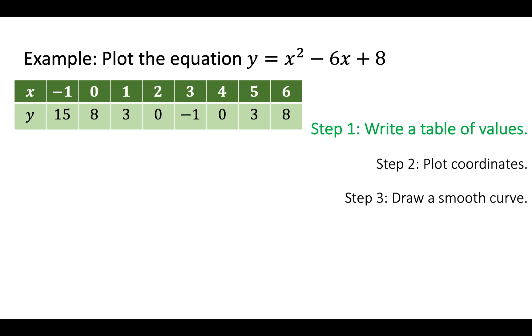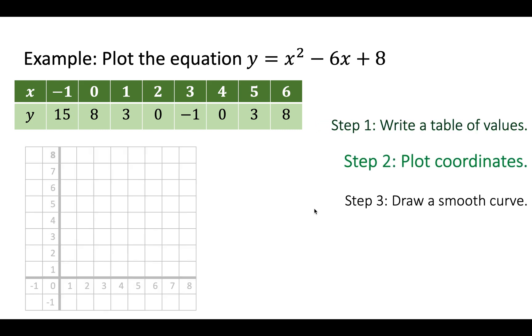And this is what you get. So you get these y values here. And so the x equals minus 1 is paired with y equals 15. x equals 0 is paired with y equals 8. And all of these form coordinate pairs.